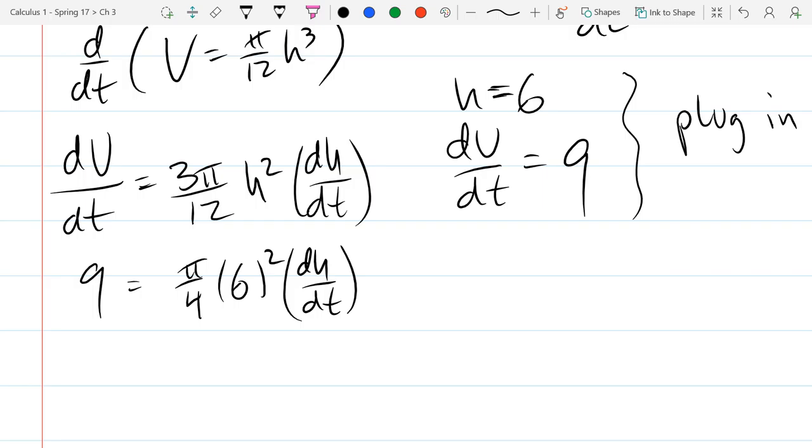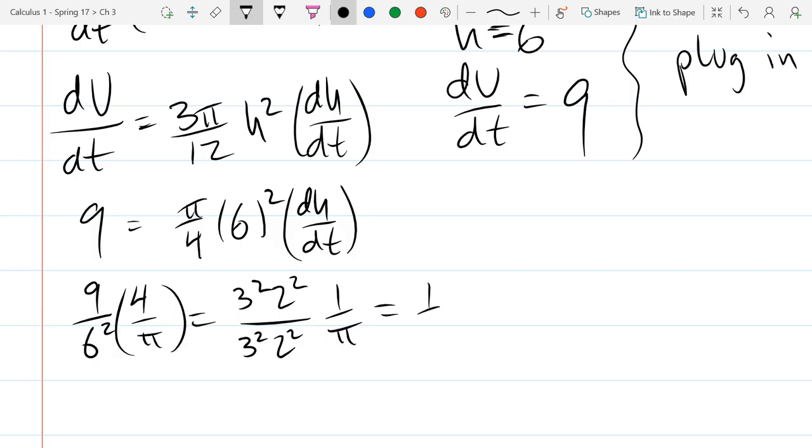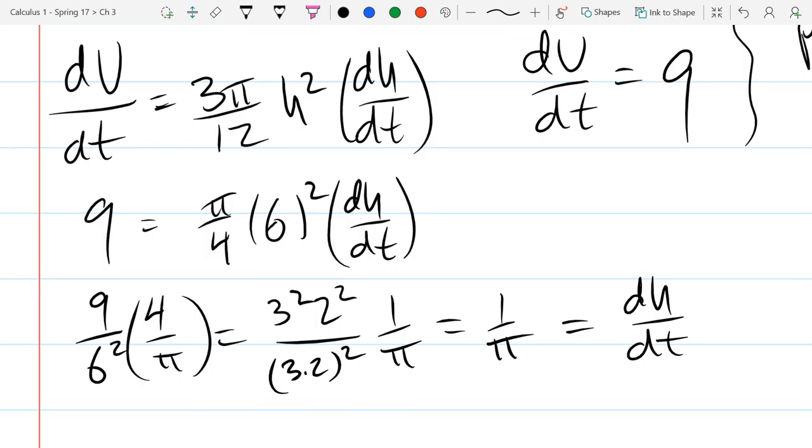So I just plugged in the h value and dv dt. So how do we find dh dt? We're almost there. You just divide by all this stuff or multiply by the reciprocal. So we have 9 over 6 squared, 4 over pi. And this should reduce pretty nicely. And of course, that was dh dt. So that is dh dt.